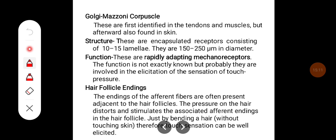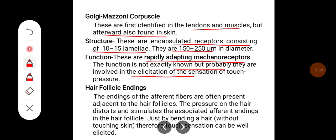Golgi-Mazzoni corpuscles were first identified in tendons and muscles but were afterwards also found in the skin. These are encapsulated receptors consisting of 10 to 15 lamellae and are 150 to 250 micrometers in diameter. These are rapidly adapting mechanoreceptors probably involved in the elicitation of touch-pressure sensation. Hair follicles: the endings of afferent fibers are often present adjacent to hair follicles. Pressure on a hair distorts and stimulates the associated afferent endings — by just bending a hair without touching the skin, touch sensation can be elicited.